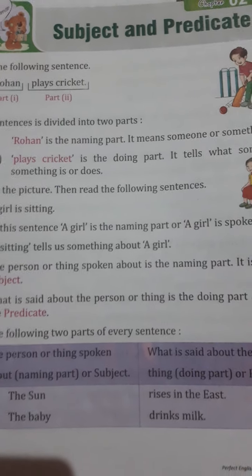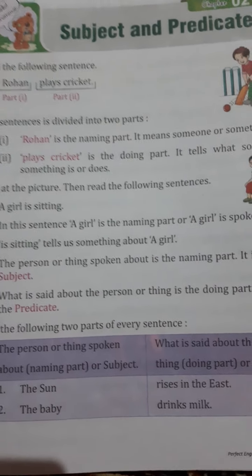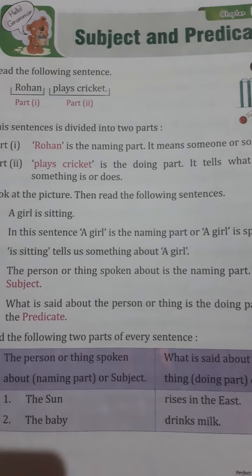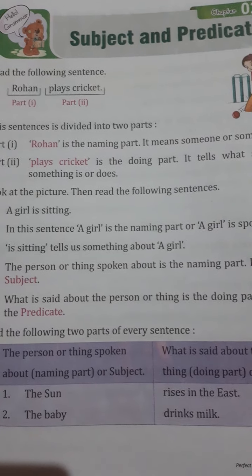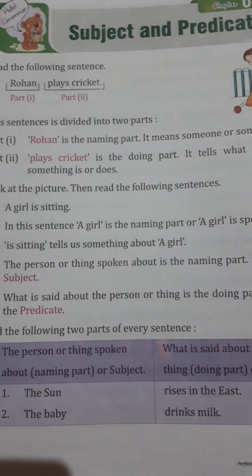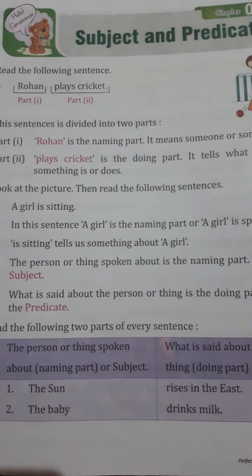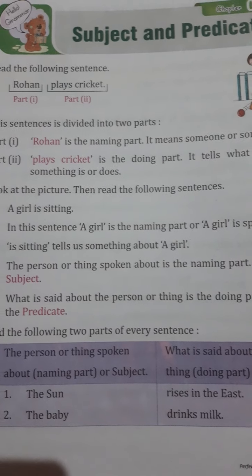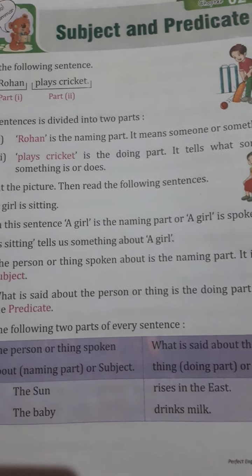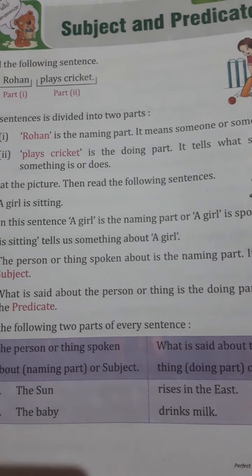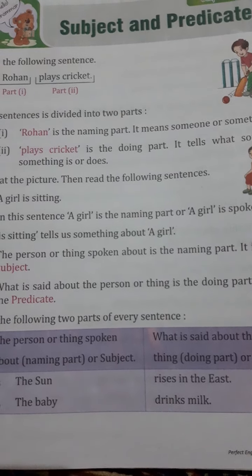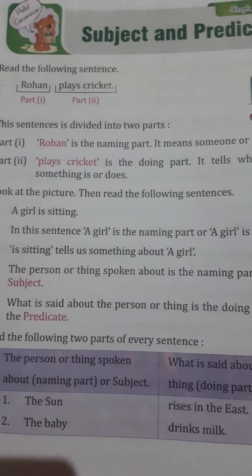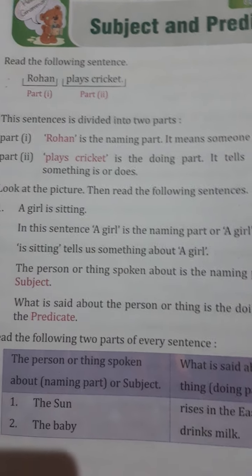Look at the first example: Rohan plays cricket. Rohan is the naming word. This is part 1, and 'plays cricket' is part 2. Rohan is telling us that he plays cricket, which is the predicate. So 'plays cricket' is the second part.